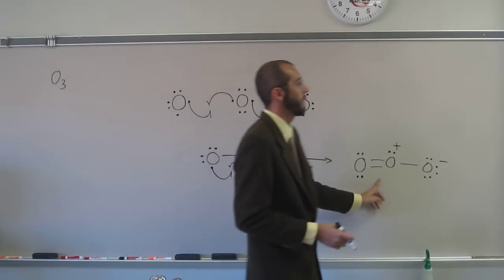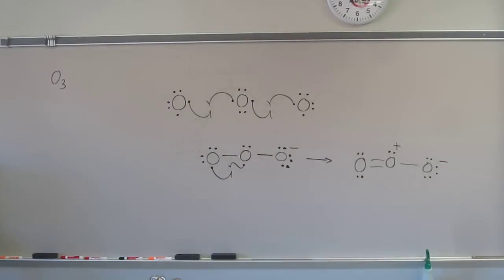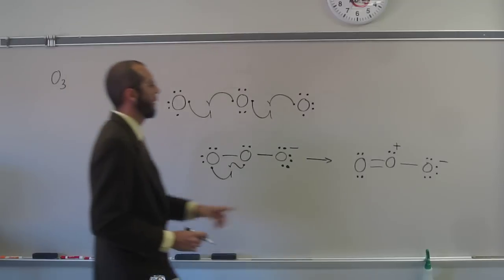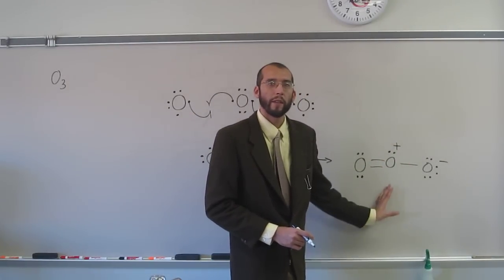So this is one of those bent molecules that is not like water bent, but more like this type of bent, right? So we've got one, two, three areas of electron density. Does everybody see that?